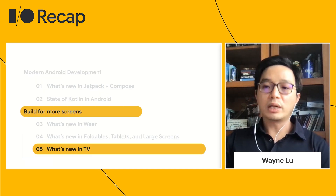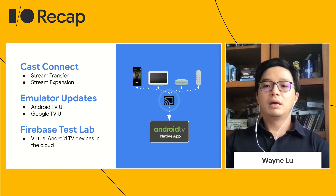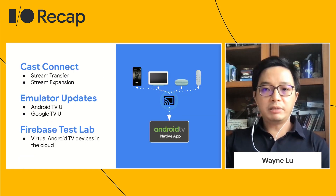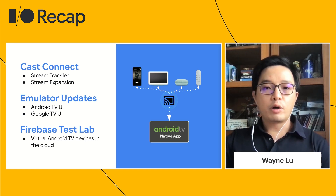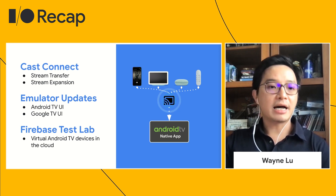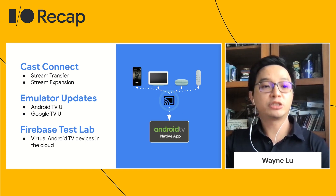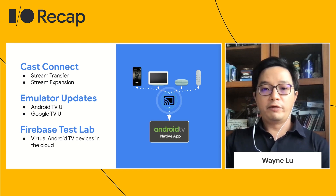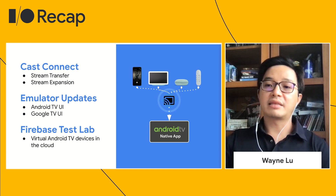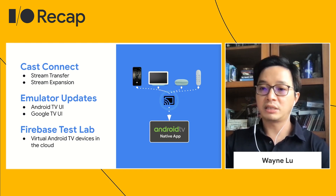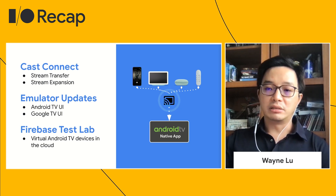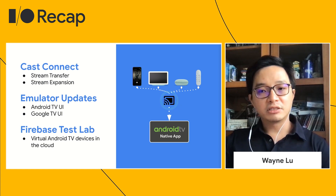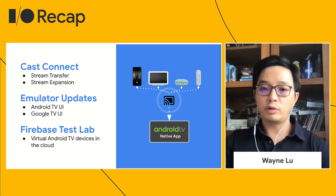Last but not least, let's cover what's new in TV. For TV, we care deeply about the user experience. We are introducing two new Cast Connect features to help build more engaging experiences: Stream Transfer and Stream Expansion. With Stream Transfer, users can switch the cast content from another device just by using their voice. With Stream Expansion, users can add speakers to what is currently playing on the stream.